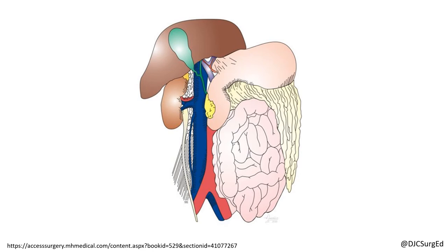The infrarenal aorta can also be accessed through the mesentery of the transverse colon by elevating the colon cephalad and dividing the ligament of Treitz, as seen here.